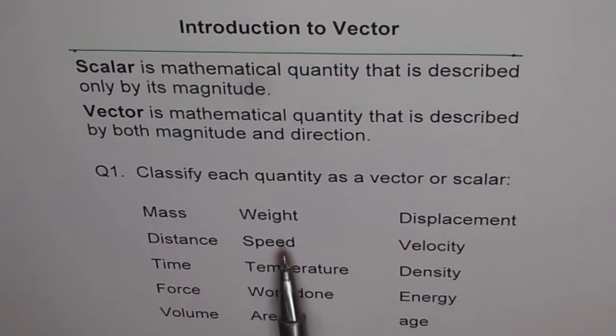So we have mass, weight, displacement, distance, speed, velocity, time, temperature, density, force, work done, energy, volume, area, age.